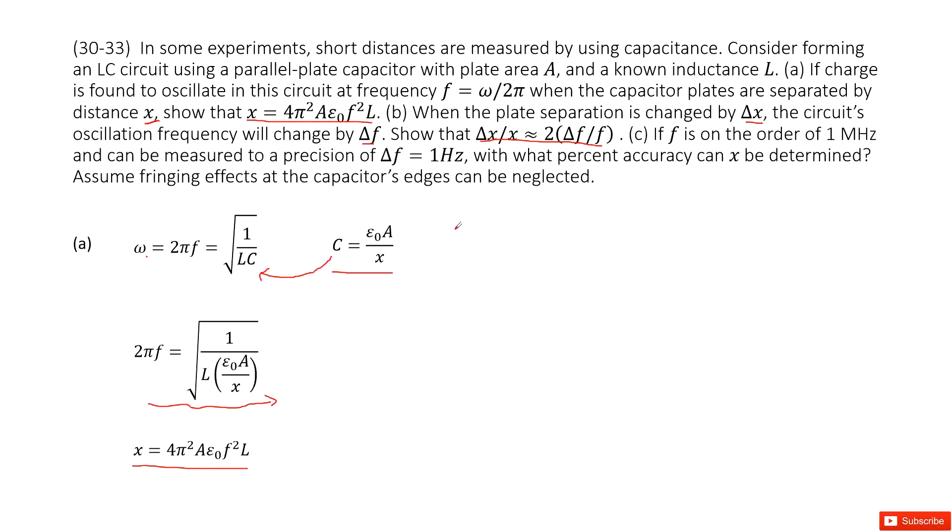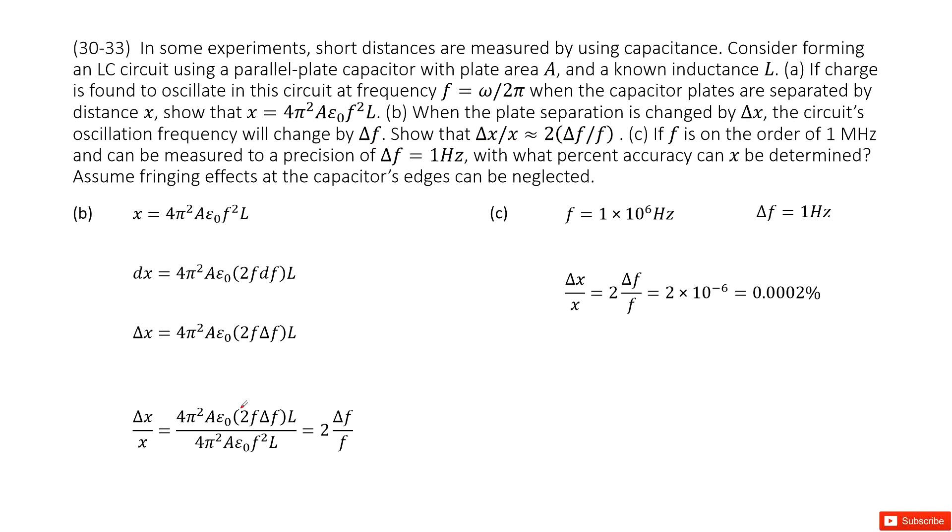Now, if there are small changes for x, we can get the derivative for x. So the derivative dx equals 4π² A ε₀ 2f df L. So we do the derivation at two sides, left side and right side. As we know, the derivative is just a small fraction of x. So dx we can write as Δx, df we can write as Δf.